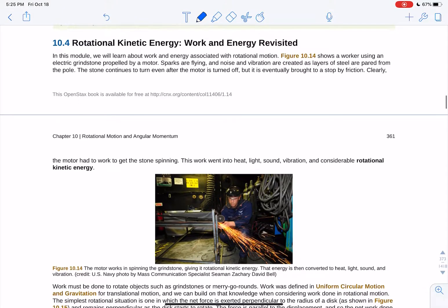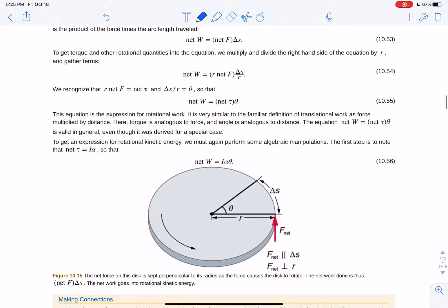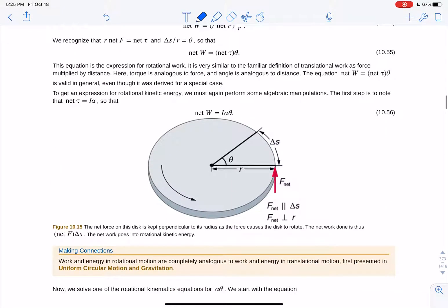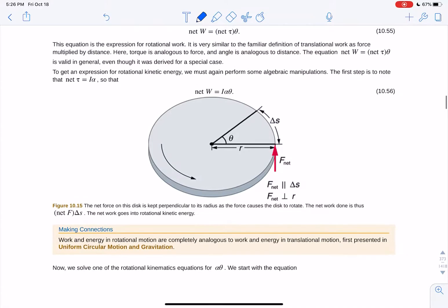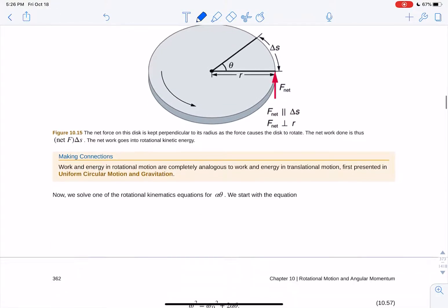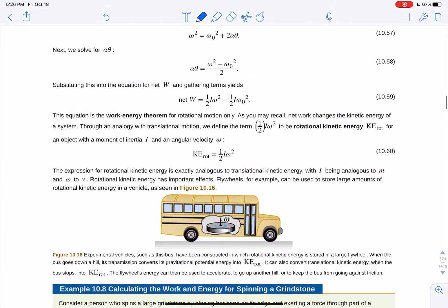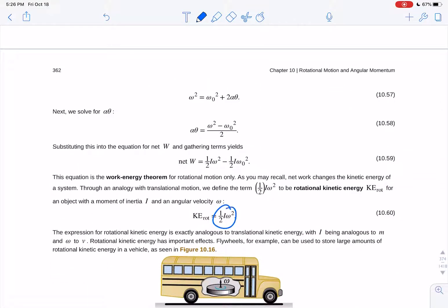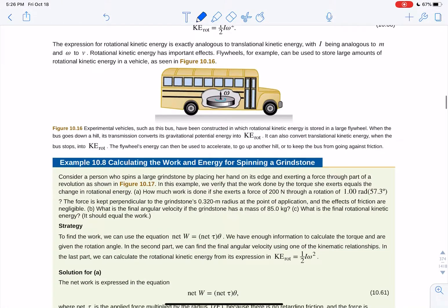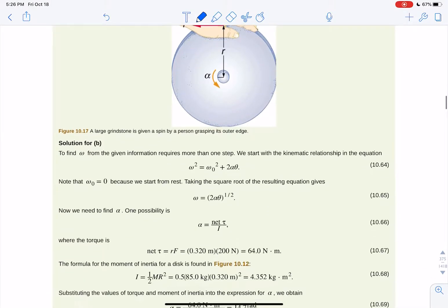So your rotational kinetic energy work and energy revisited. The same thing here. Work is I alpha times distance or force times distance. Moment of inertia times alpha torque times distance. And again, you've got your kinetic energy, which is one half I omega squared. We replace m and v with I and omega, and we get one half I omega squared.